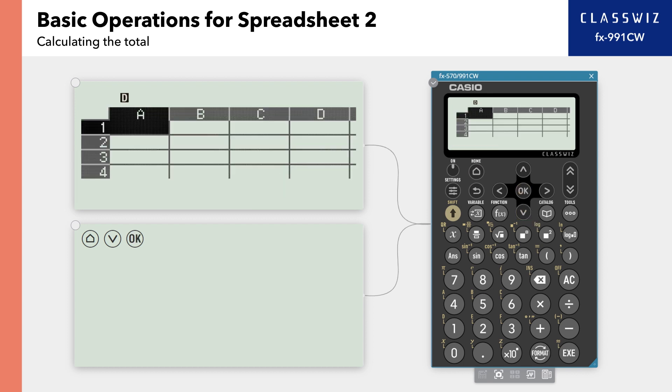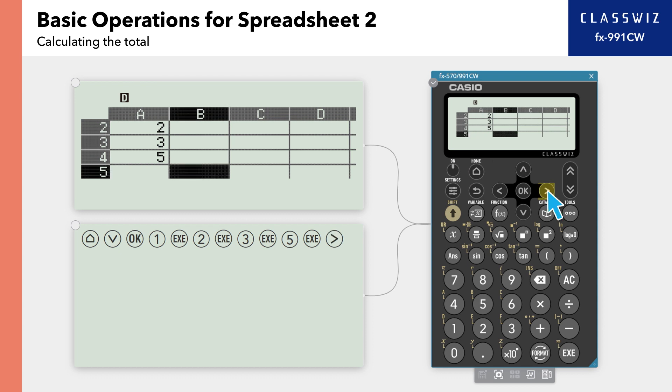Enter values in cells A1 through A4. Let's find the total value in cell B2. Select the blank cell B2.